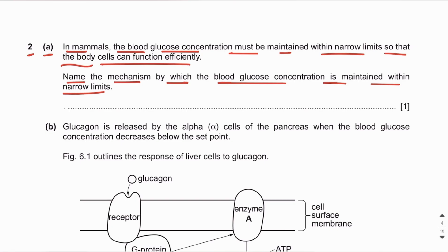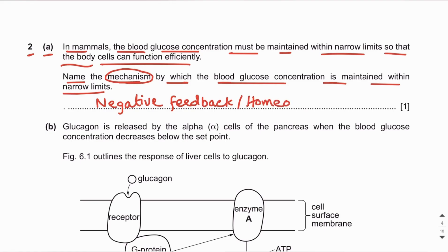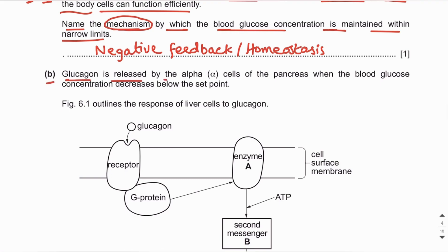Homeostasis is basically the maintenance of a constant internal environment. All the physiological factors of the internal environment are maintained to a constant value — for example, the water potential of blood, glucose concentration, and temperature of blood. The mechanism by which homeostasis is brought about is known as negative feedback. You can also write homeostasis as the answer, since they are asking about the mechanism.